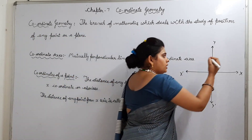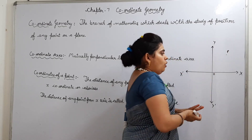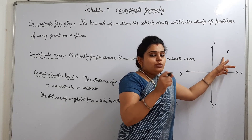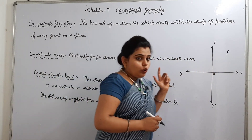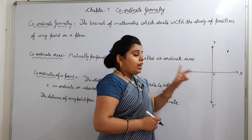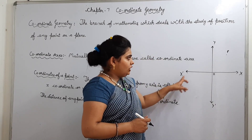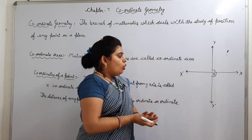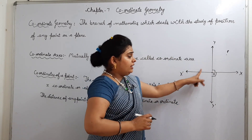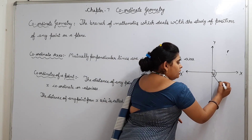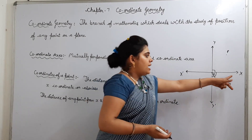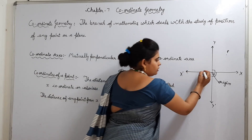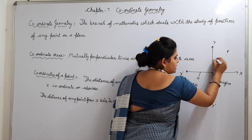This is a plane surface. Suppose this is a point P. We will study the position of this point on this plane surface. For studying the position of this point, we require coordinate axes. These two mutually perpendicular lines - X, O, X-dash and Y, O, Y-dash - are mutually perpendicular, meaning they make a 90-degree angle. They intersect each other at point O, which is called the origin. X, O, X-dash is called the X-axis and Y, O, Y-dash is called the Y-axis.